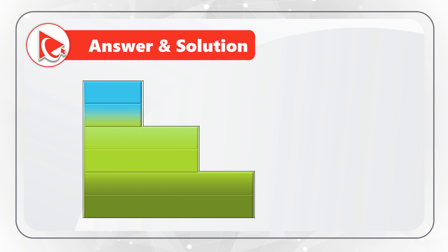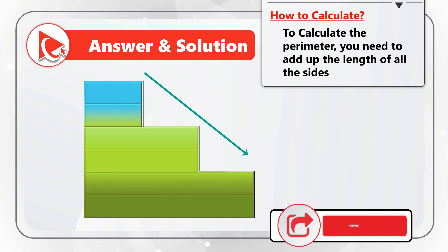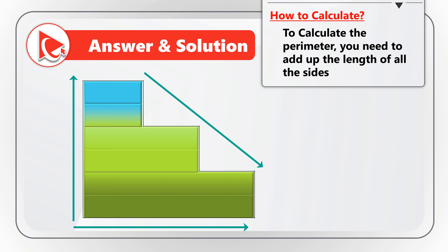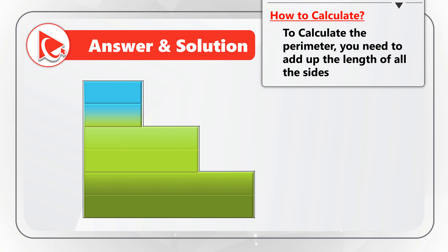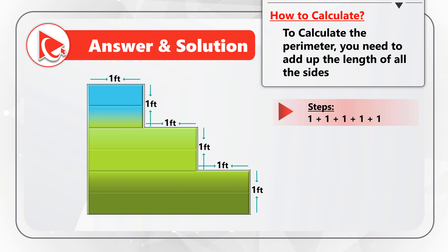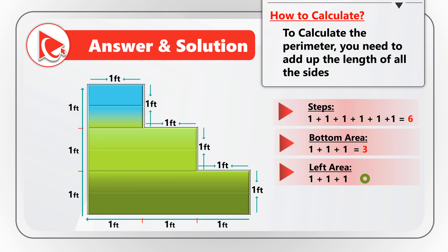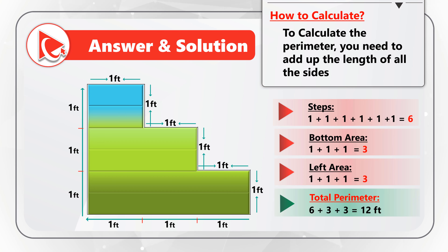To calculate the perimeter, you need to add up the length of all the sides. The object has steps with measurements, and also has solid sides at the bottom and on the left. The top sides are all one foot and the heights of every step are also one foot, giving 6 sides totaling 6 feet for the steps. The bottom area is 3 feet and the left area is 3 feet as well. So the total perimeter is 6 + 3 + 3 = 12 feet. The correct answer is Choice C: 12 feet.